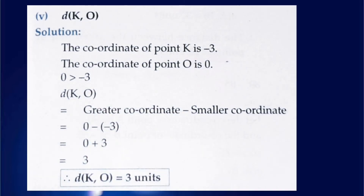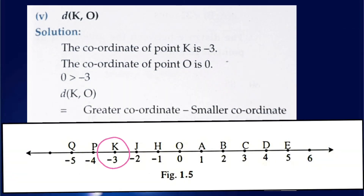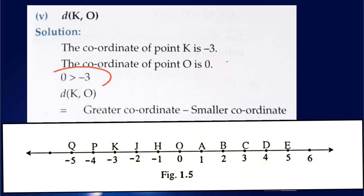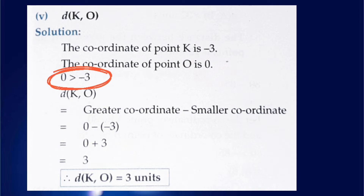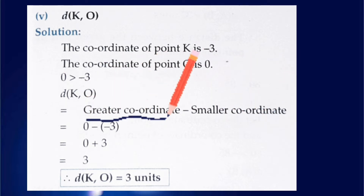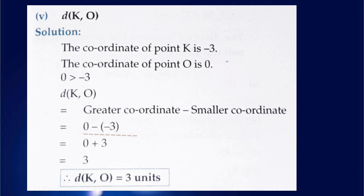Next, the distance between K and O. The coordinate of K is minus 3 and the coordinate of point O is 0. Since 0 is greater than minus 3 — because minus 3 is to the left of 0 and as we move left the value decreases — the distance between K and O equals greater coordinate minus smaller coordinate: 0 minus (minus 3). Minus minus is always plus, so we get 0 plus 3, which equals 3. Therefore the distance of K and O is 3 units.